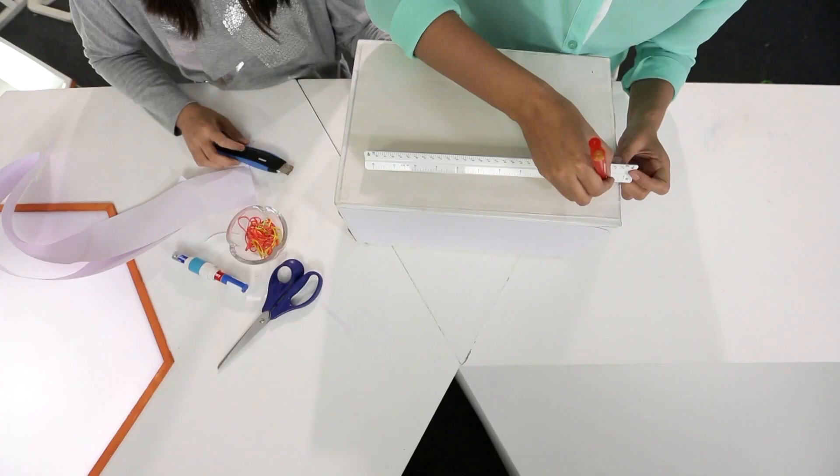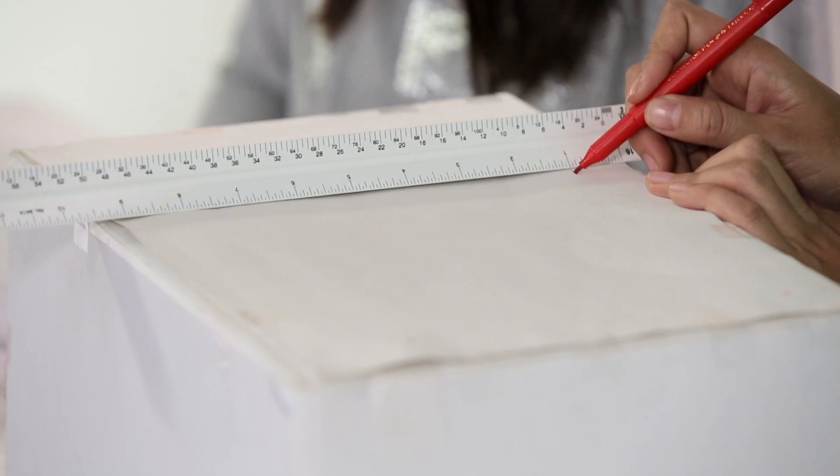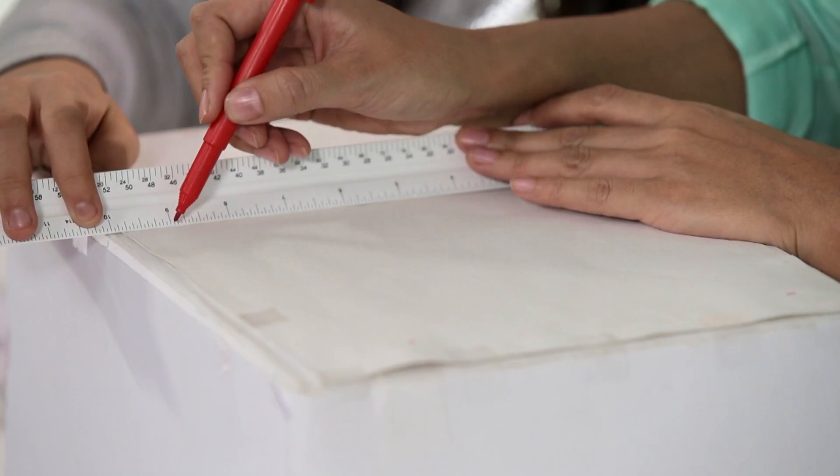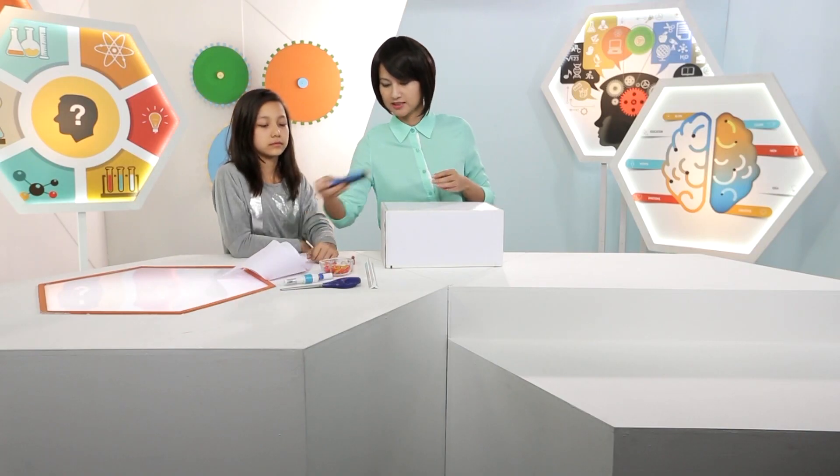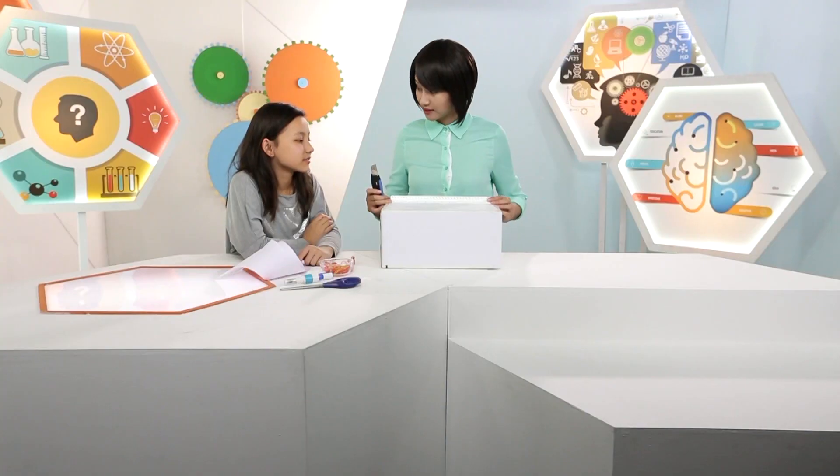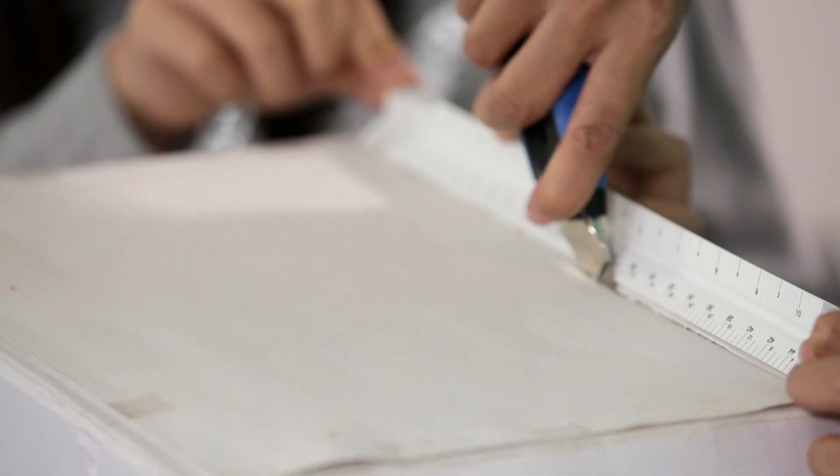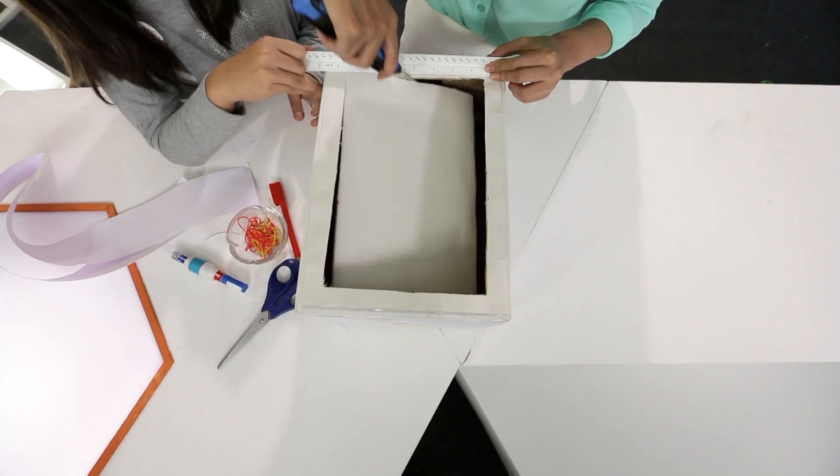First of all, we're gonna take the box, leave approximately one inch from each side of the box and mark it. We'll carefully cut it. You might like to ask an adult to help you. Now we have to cut...